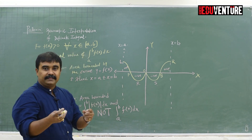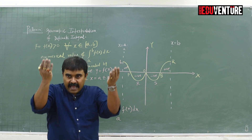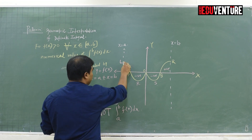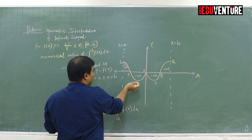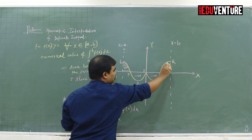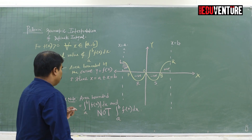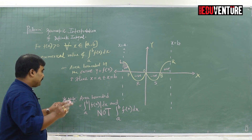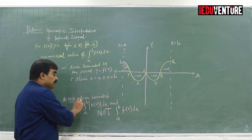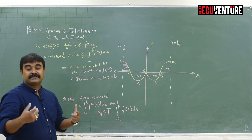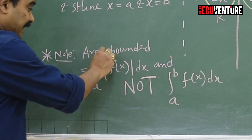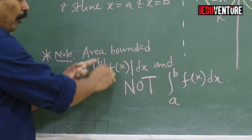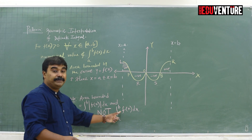Our sign convention is very simple: above the origin is positive and below the origin is negative. So all the curve segments — the boundary values — the areas above the origin are positive and below are negative. The basic lesson you need to understand is that the area bounded must be the numerical value, because area cannot be negative. That's why we always say the area bounded is the integral from a to b of |f(x)| dx, and not simply the integral from a to b of f(x) dx.